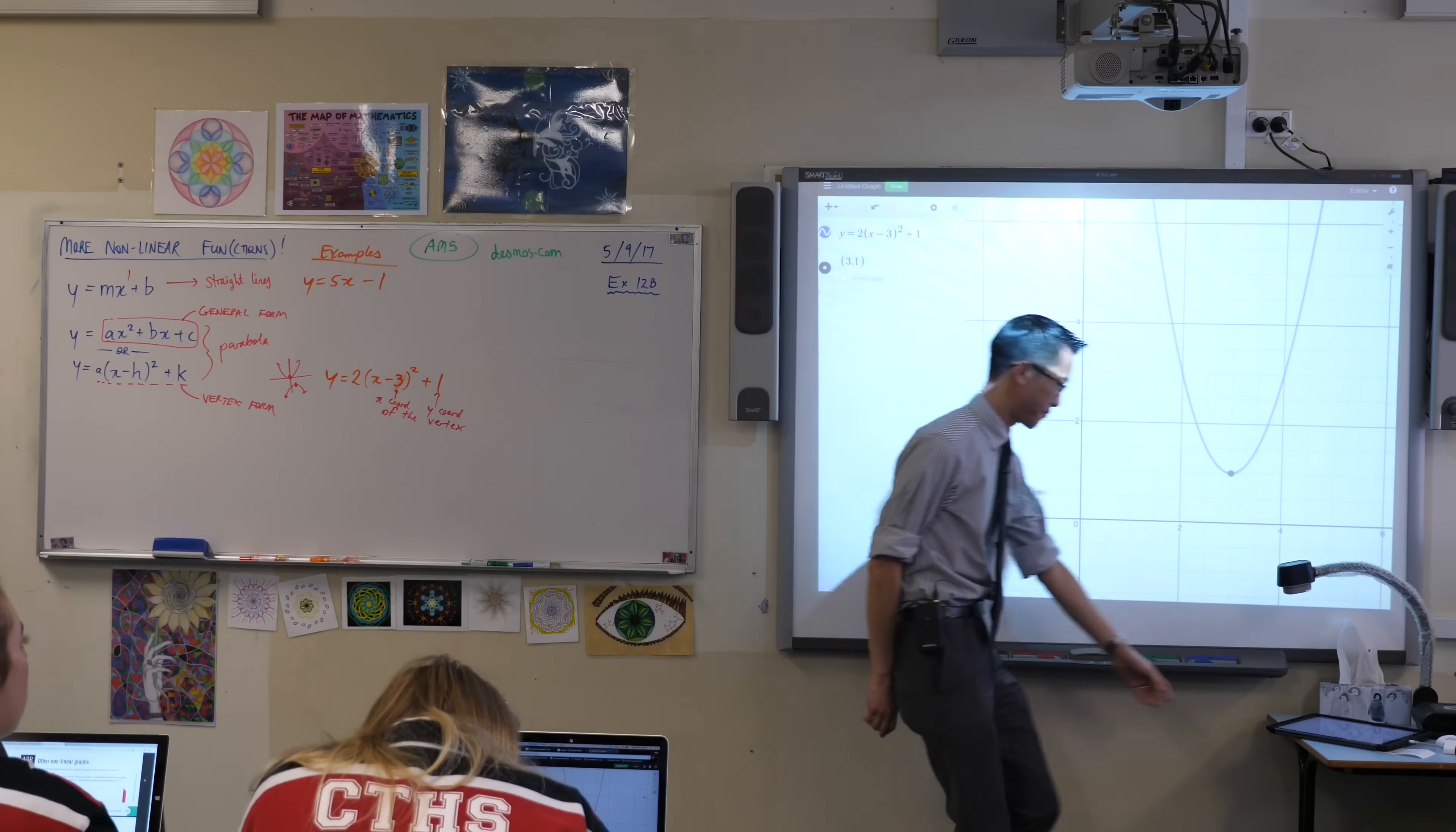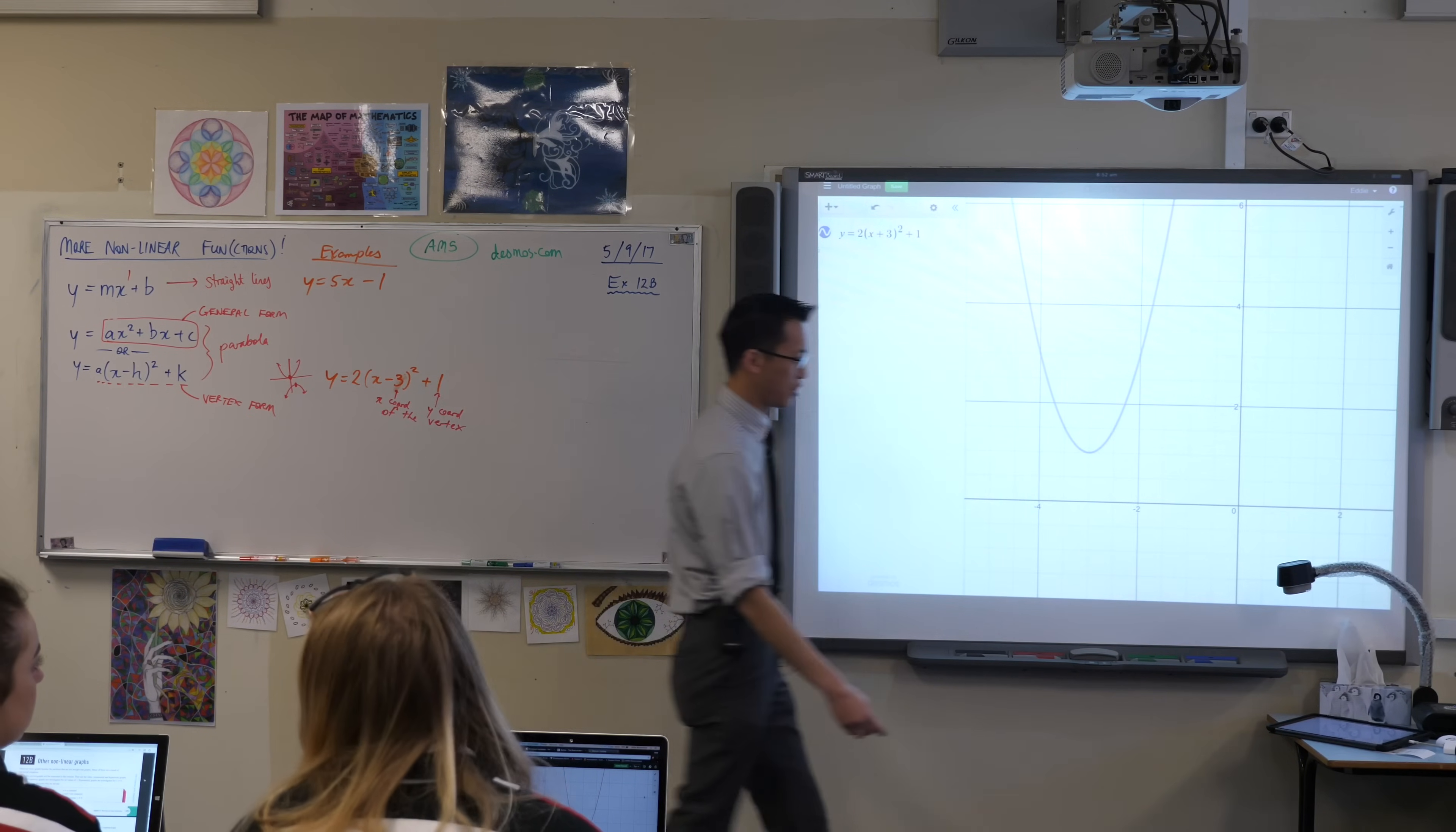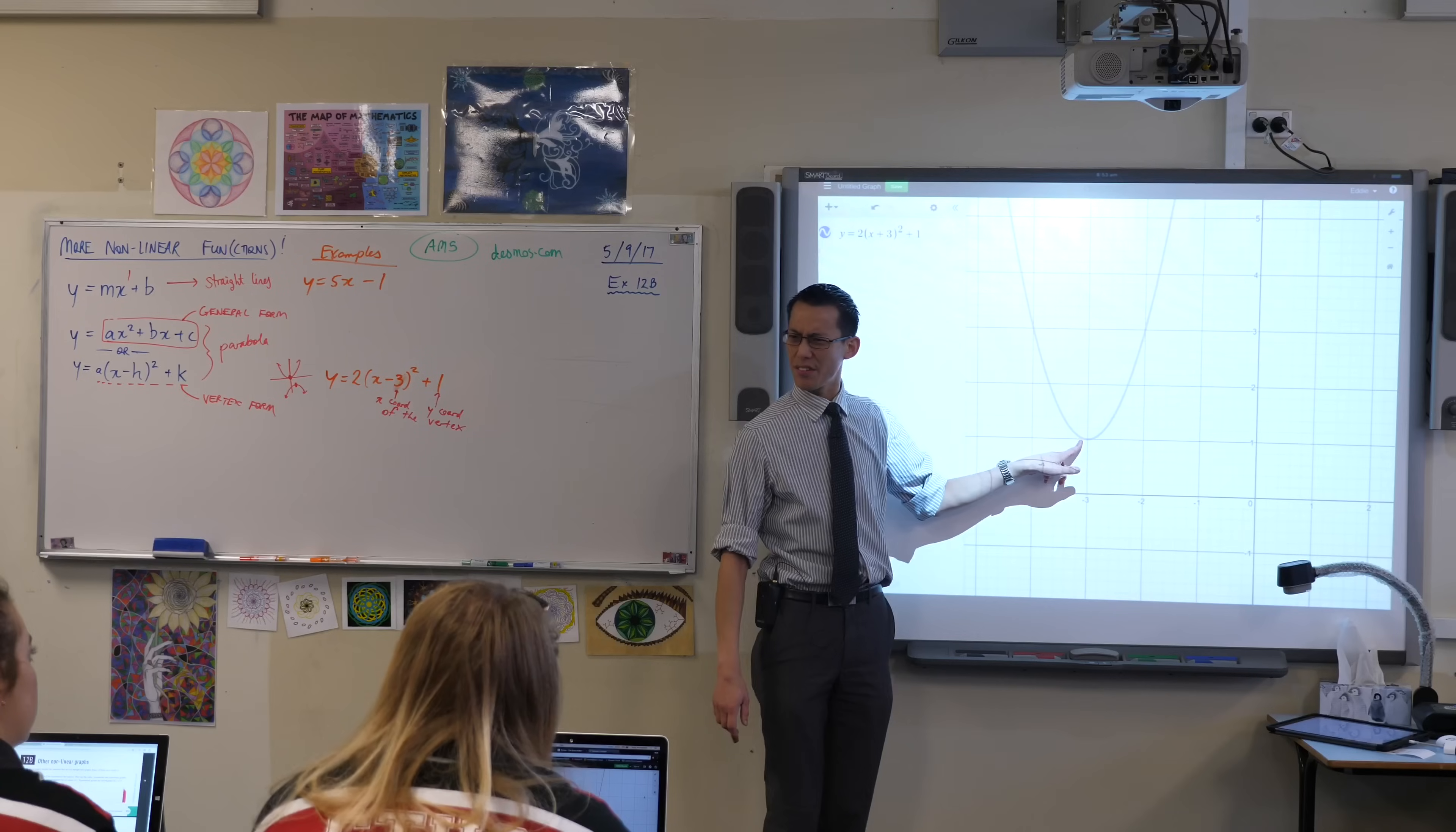If I change the minus 3 into a plus, what happened? It's come all the way over here. Now you can have a look. Maybe I'll zoom in a little bit just so you can see the numbers. You can see the vertex has come all the way over here. It's not over at positive 3, it's over here at negative 3. That's a bit funny, isn't it?